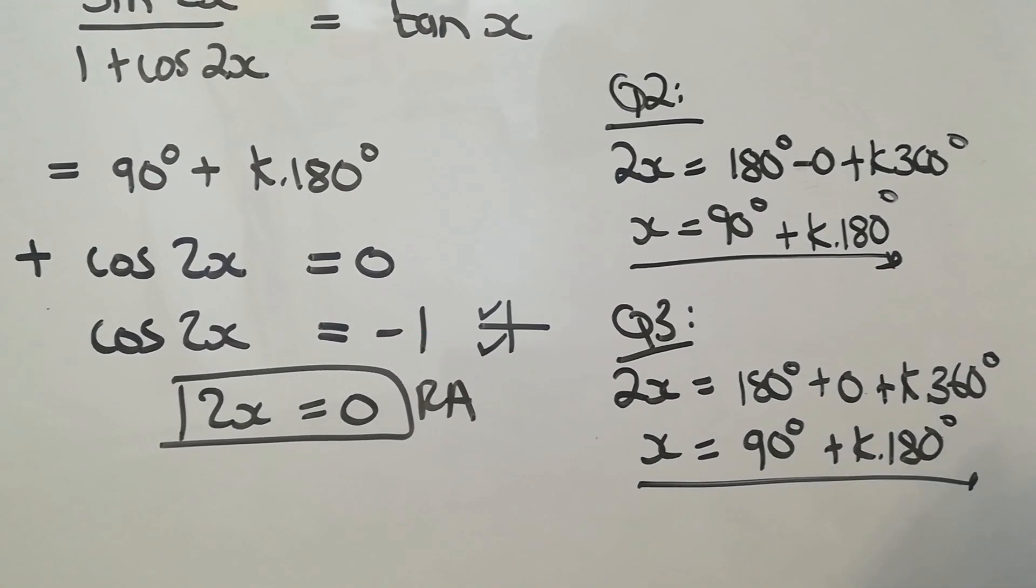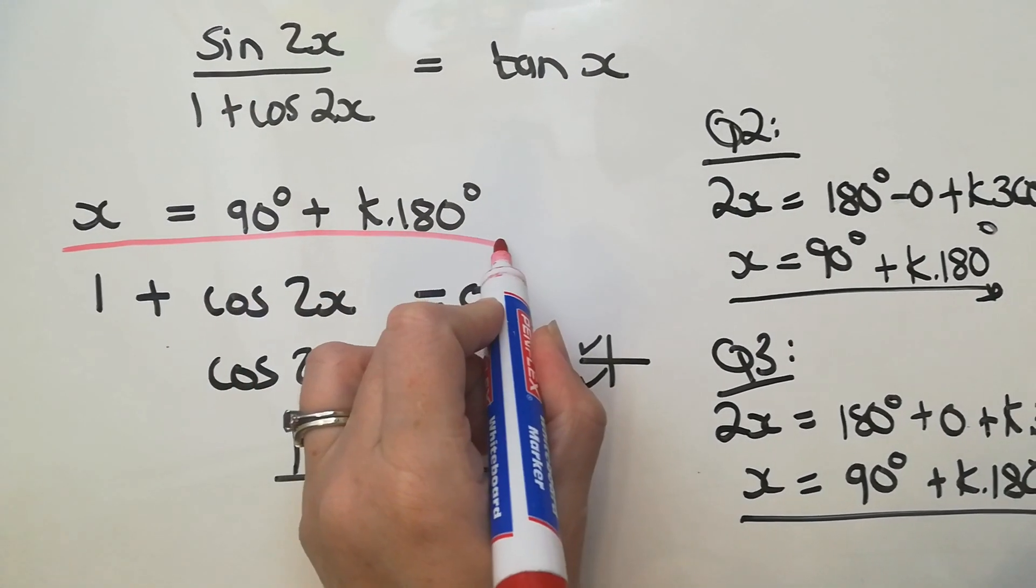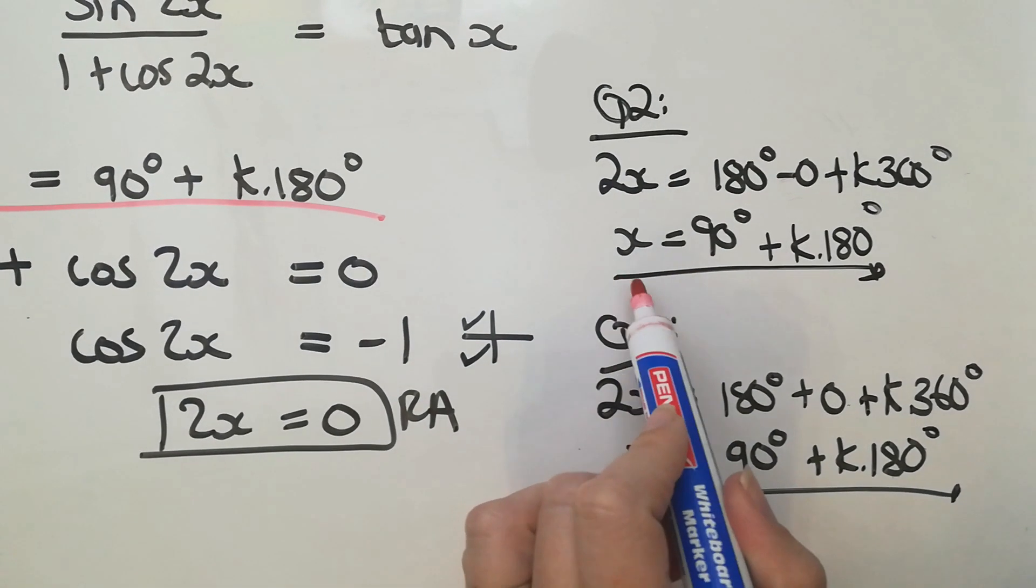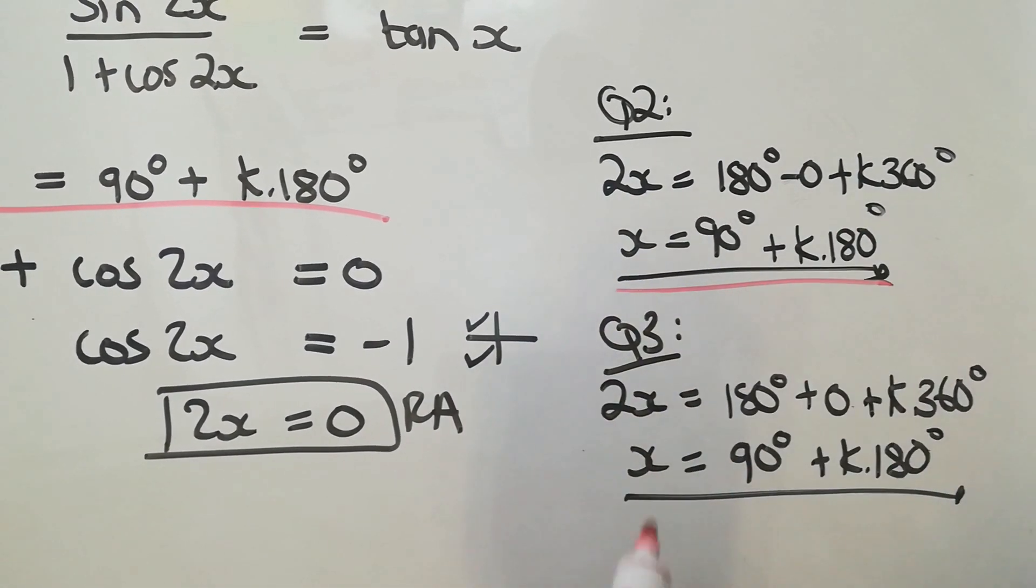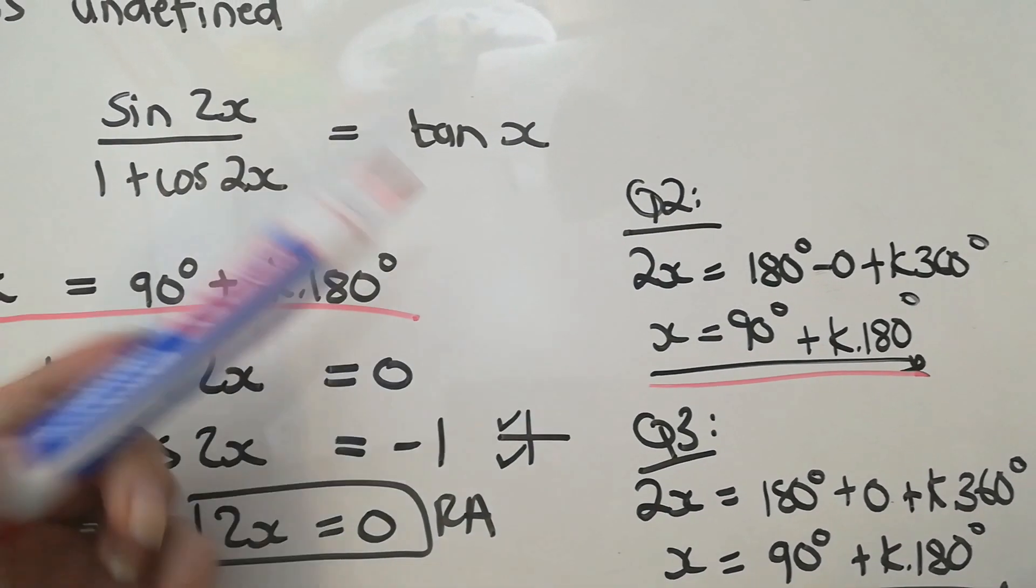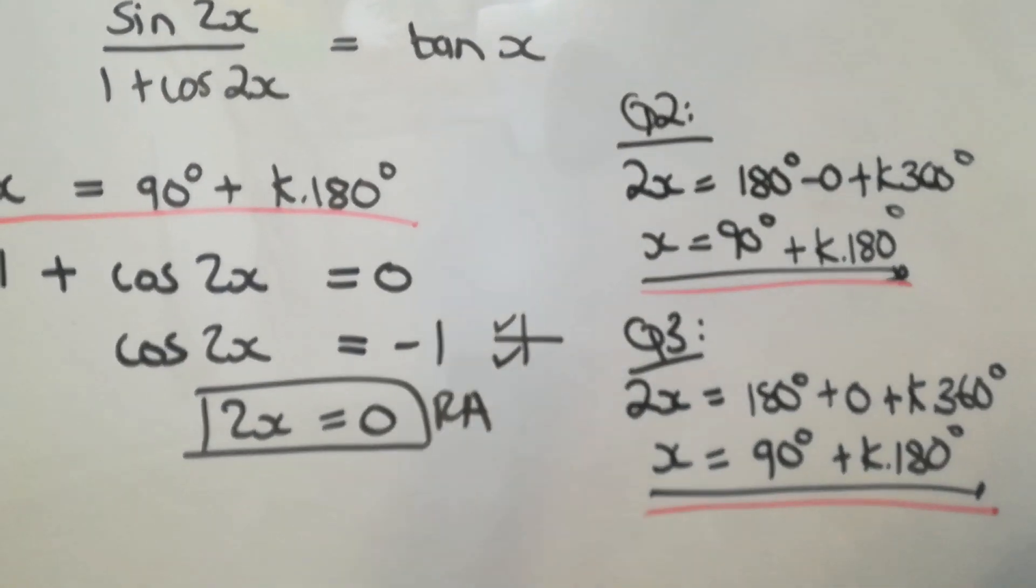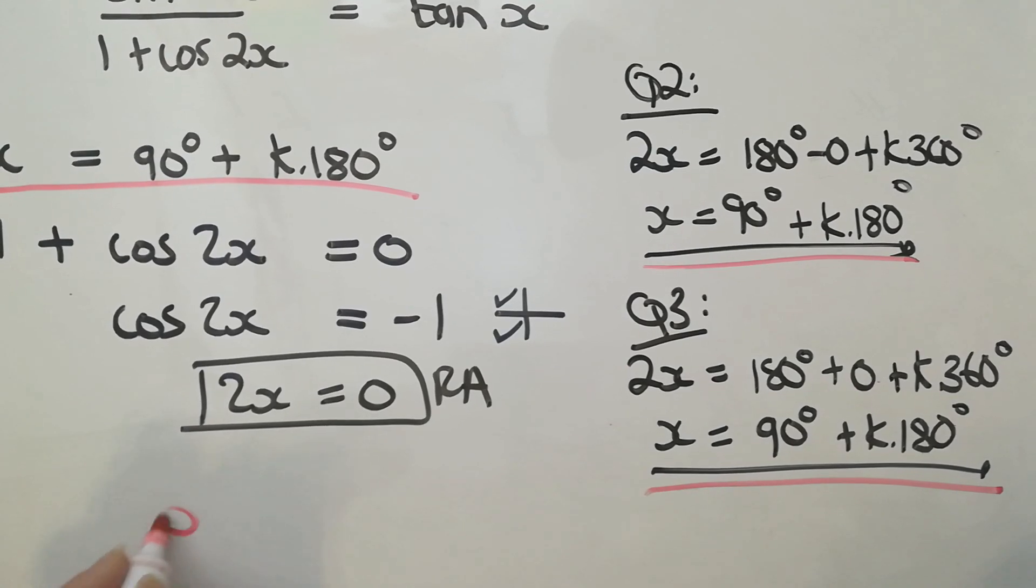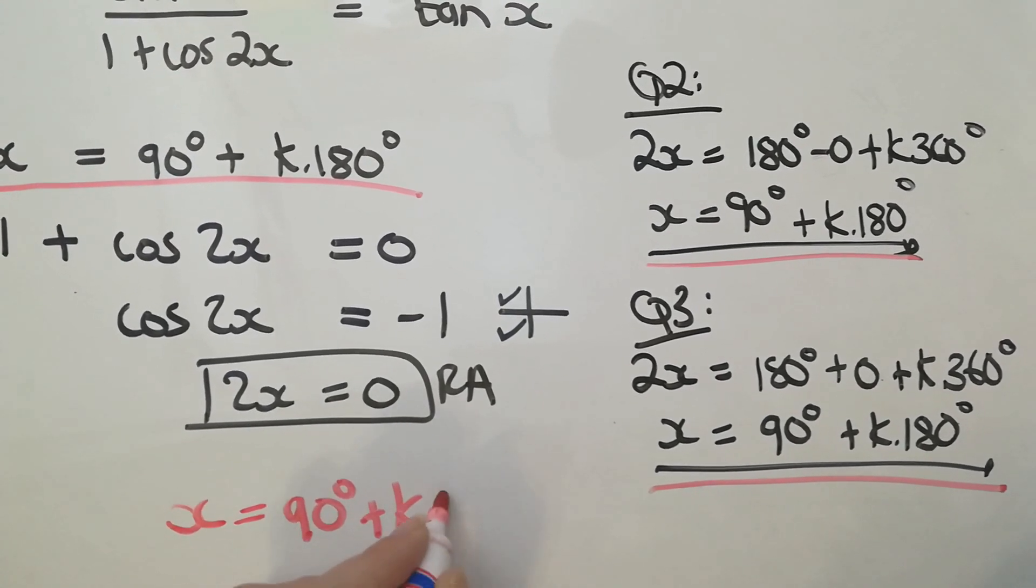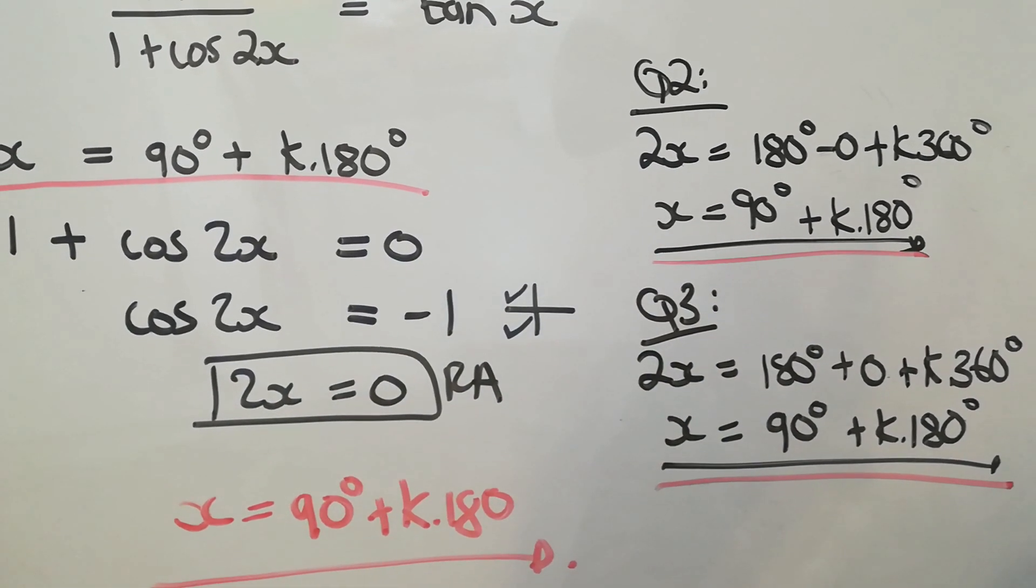Have a look at something here. When I did the tan one, I got 90 plus k180. When I did the cos one, I got 2 versions of the same thing. So there's only one solution. There's only one solution for where x must have a value to make this whole thing invalid. So my final solution is simply where x equals 90 degrees plus k180. There's only one problem. There's only one area where this whole thing would be invalid.